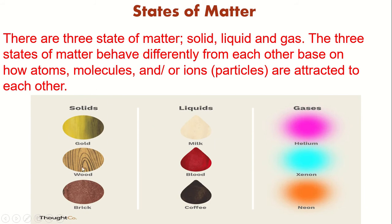Here are the examples of solid, liquid and gas. Gold, wood, brick. Liquid: milk, blood, coffee. Gaseous substance: helium, xenon, neon.